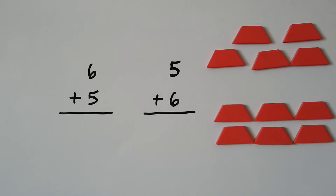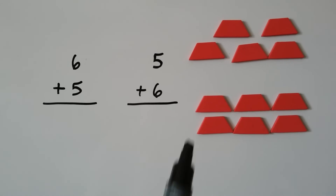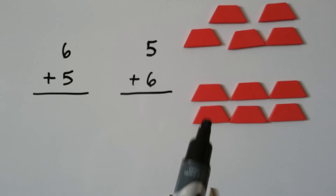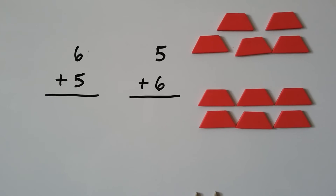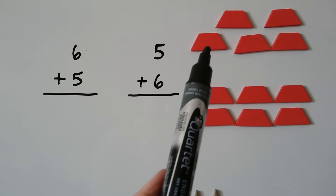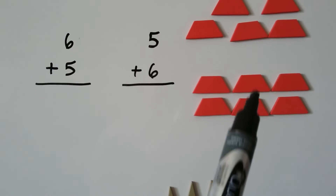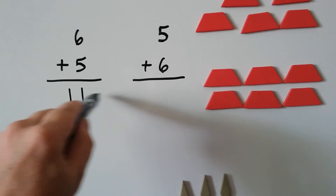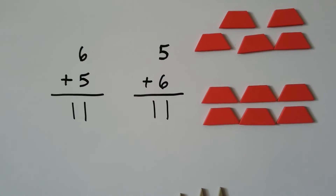Here we have six plus five and five plus six. We have five and six — counting them together we get eleven. Either way we're going to have eleven.